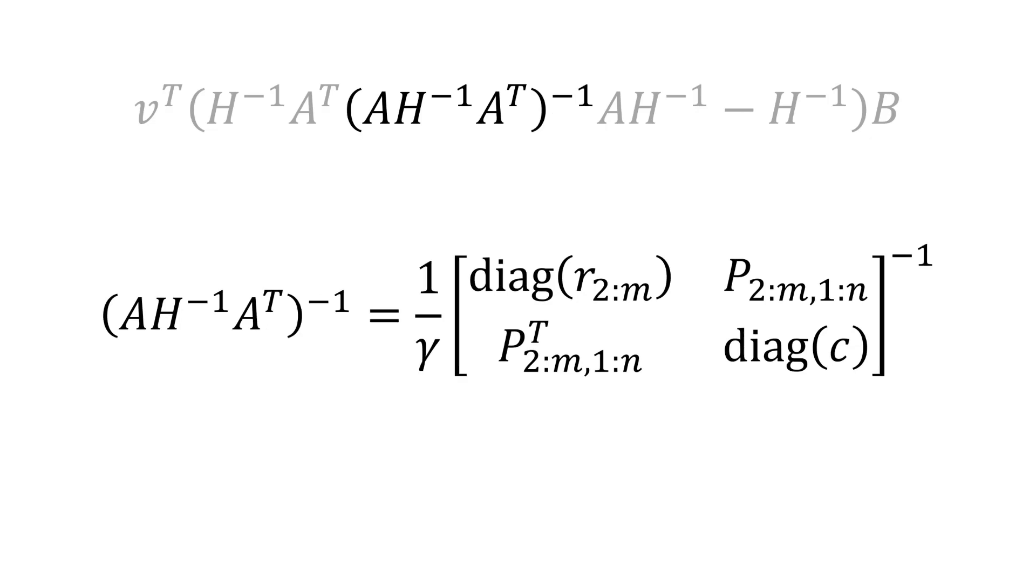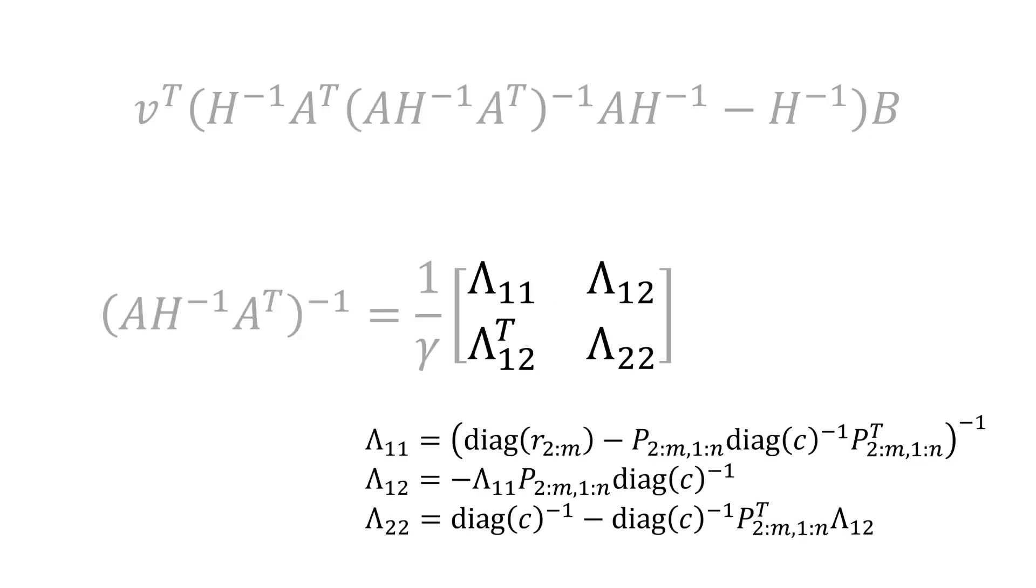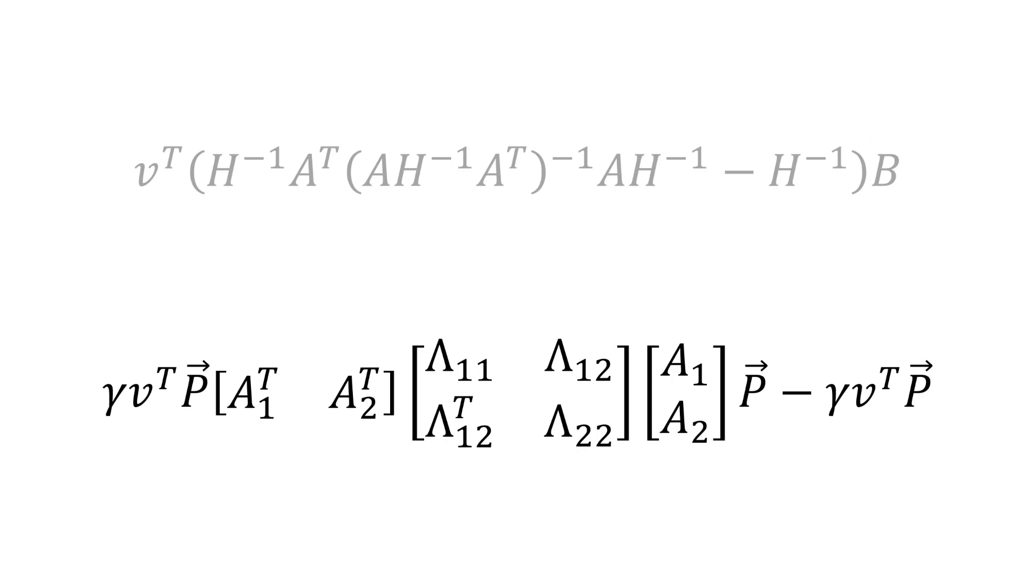We need to compute the inverse of this matrix, which can be done efficiently using a block matrix inversion formula. Here we show the explicit formulae for each block. Putting this all together, we can write our previous expression for the backward-going gradient dJ/dM as shown.